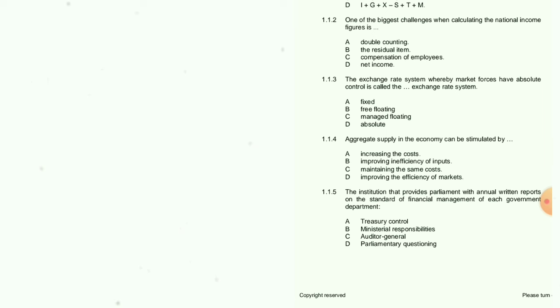1.1.4: Aggregate supply in the economy can be stimulated by — the answer is D: improving the efficiency of the markets. Not inefficiency — it's improving the efficiency. The answer is D.